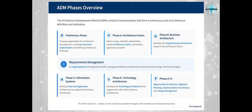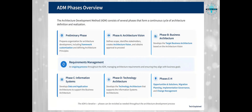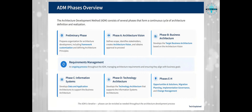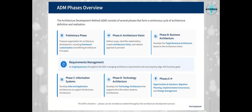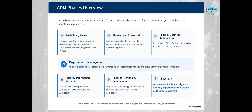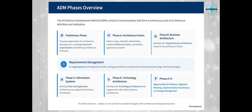Phase A is Architecture Vision, where you define the scope of your architecture initiative, identify stakeholders, create the architecture vision, and get approval to proceed. This is the starting point for all architecture development.